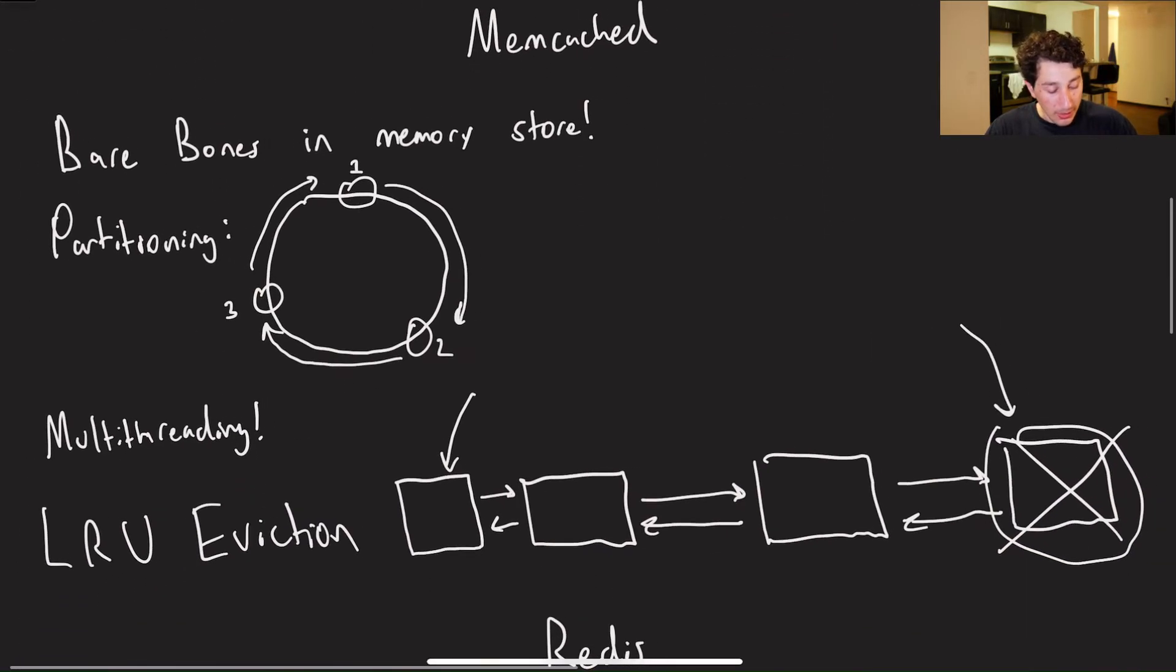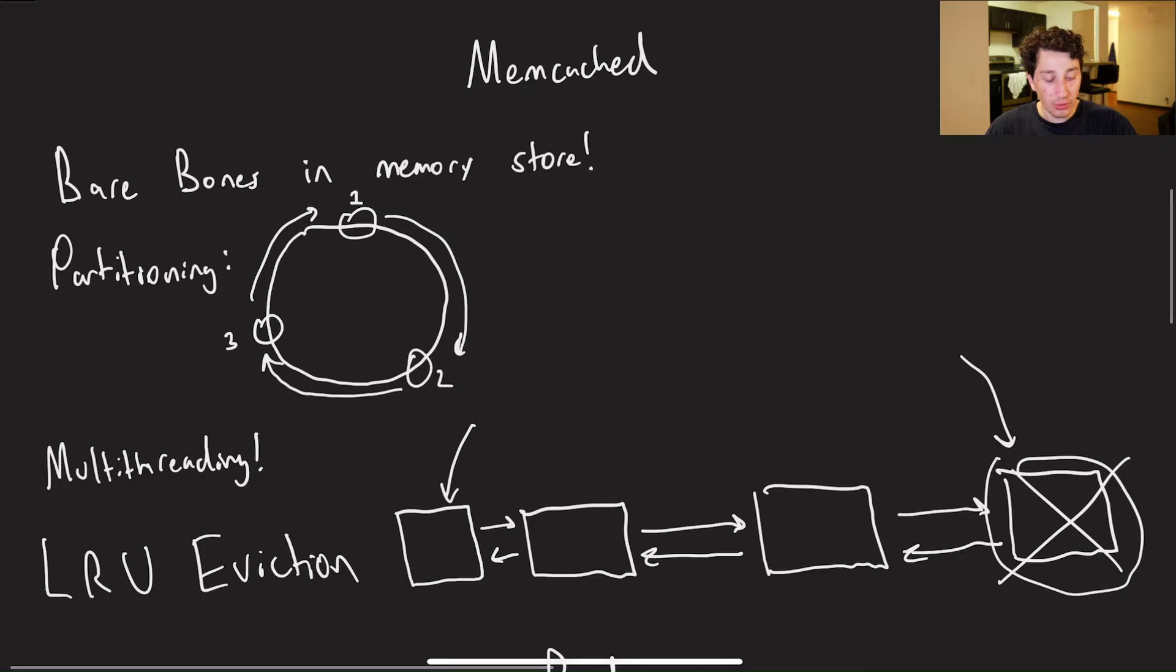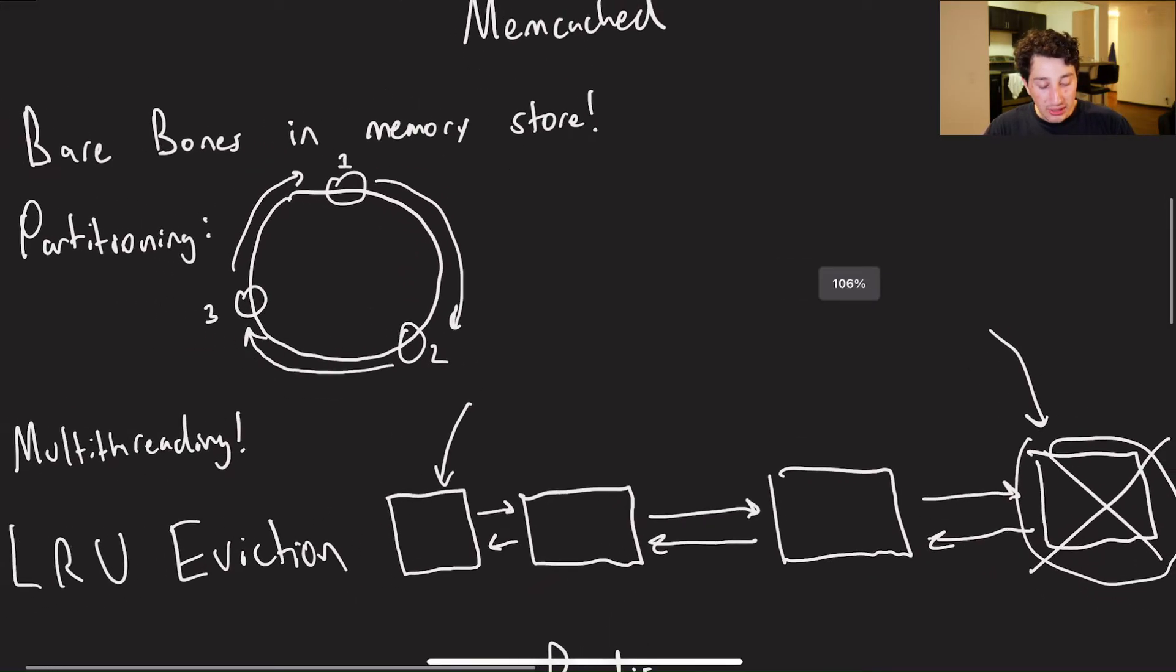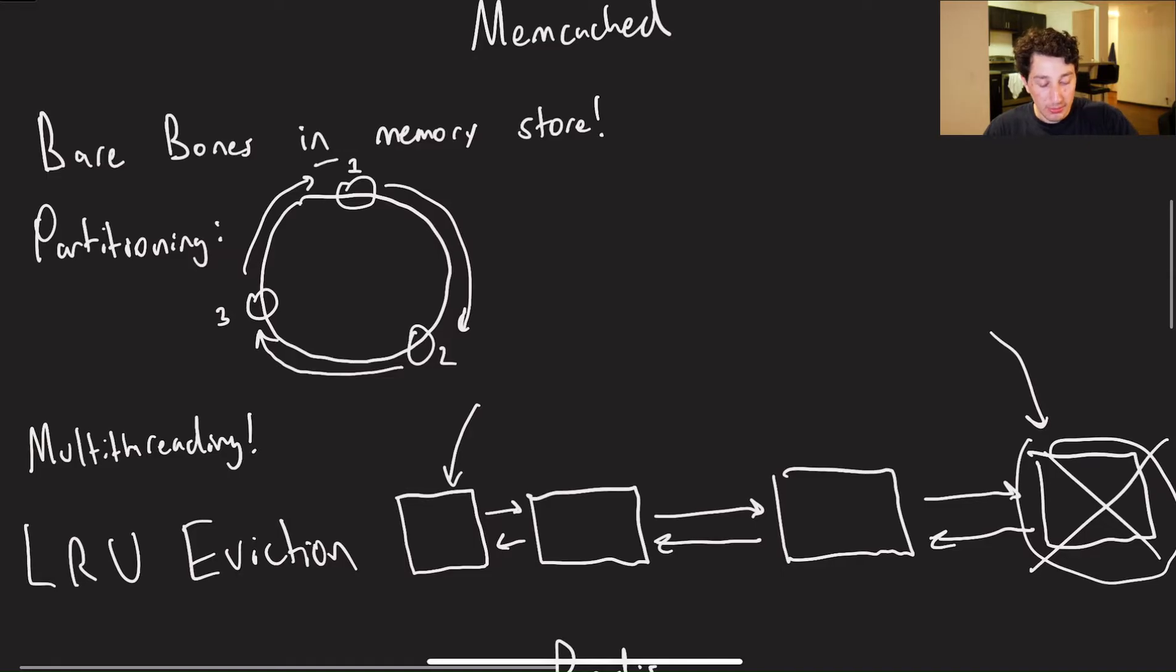So let's start by talking about Memcache first, because it's a little bit more basic, and then Redis kind of builds on top of it. So Memcache is a super bare bones in-memory store, and we can go ahead and scale this thing out by having a bunch of nodes, making it distributed, all that fun stuff. So if we do make it distributed, obviously we want some sort of partitioning, right? Fortunately, Memcache does support that for us out of the box, using a consistent hash ring.